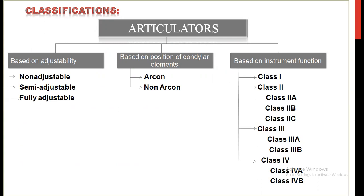According to adjustability, articulators can be divided into non-adjustable, semi-adjustable, and fully adjustable. Based on position of condylar elements, we can divide them into two: the first is called arcon and the second is called non-arcon. Based on instrument function — this classification is also known as the Michigan University classification — articulators can be classified into class 1, class 2, class 3, and class 4. Classes 2, 3, and 4 can again be subdivided into A, B, and C.